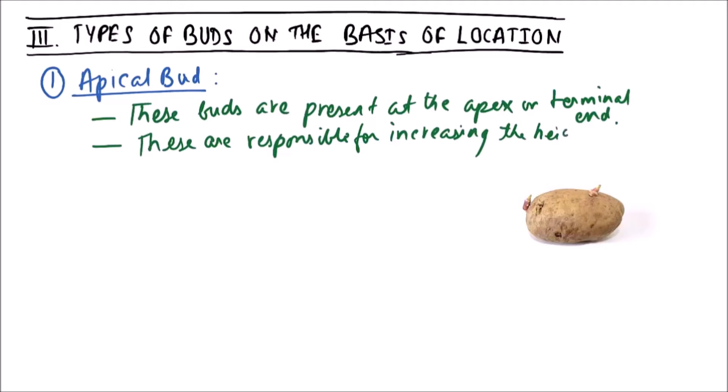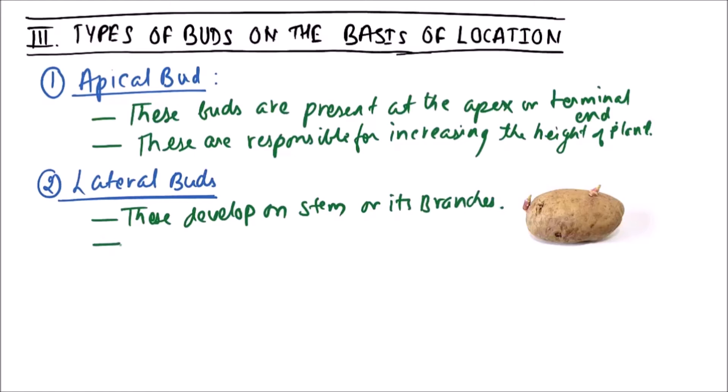The second type of buds are lateral buds. These develop on stem or its branches. Now these may be of the following types.